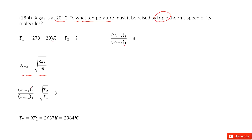So in this case, we can find the ratio: v_rms2 over v_rms1 equals the square root of T2 over T1, and we know this equals 3. T1 is given, so we can find T2. We find that T2 equals 9 times T1. Inputting the quantities gives us the answer.